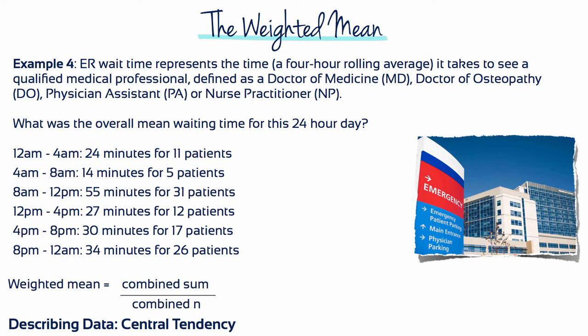It's possible to calculate a weighted mean for more than two groups. In example four, emergency room wait time is a four hour rolling average that represents the time it takes to see a qualified medical professional. You can google emergency room wait time and see different values for different hospitals. What was the overall mean waiting time for this 24 hour day?